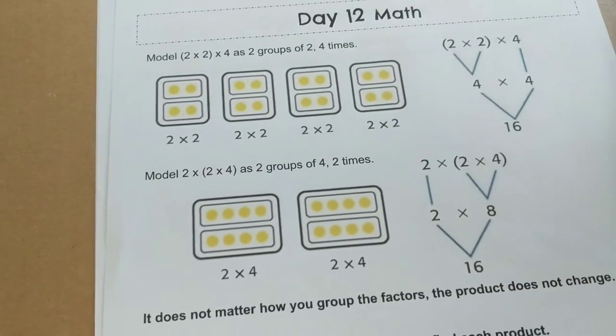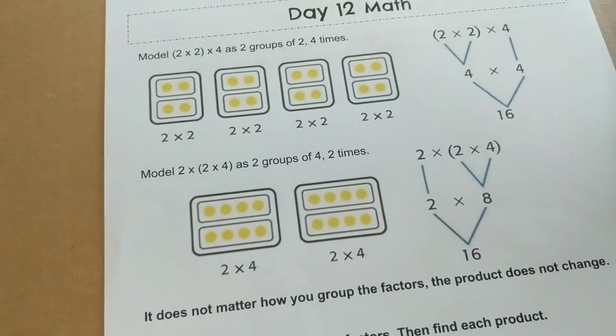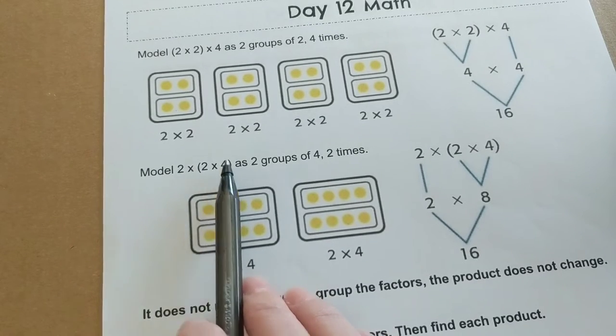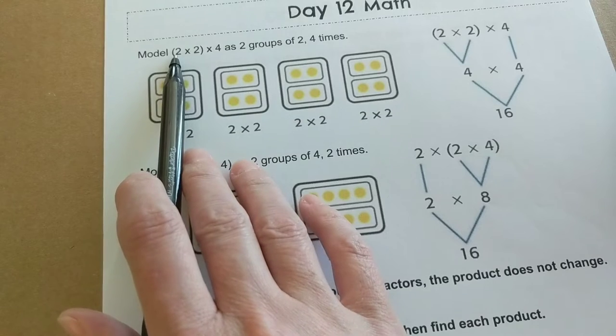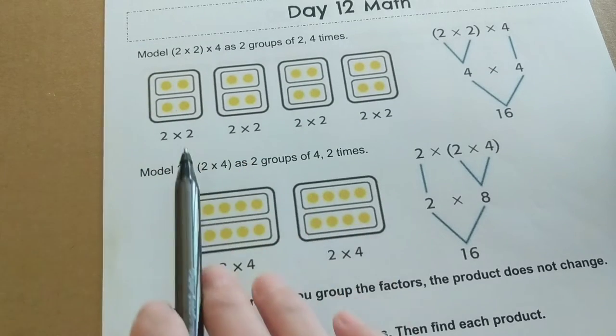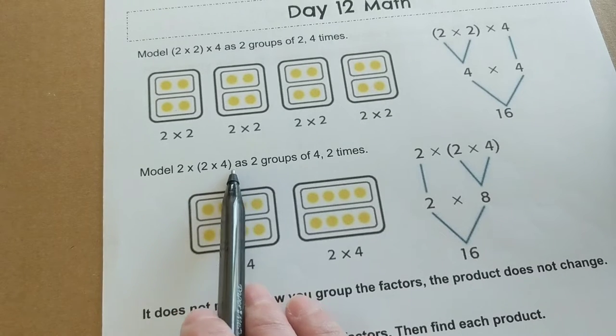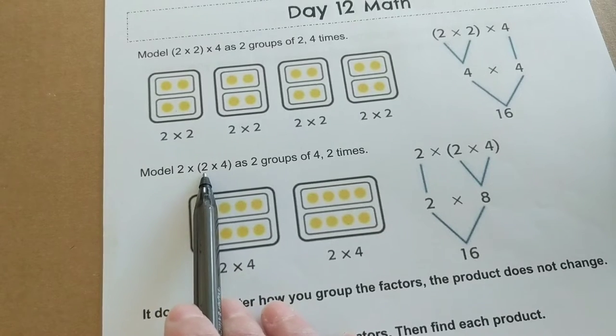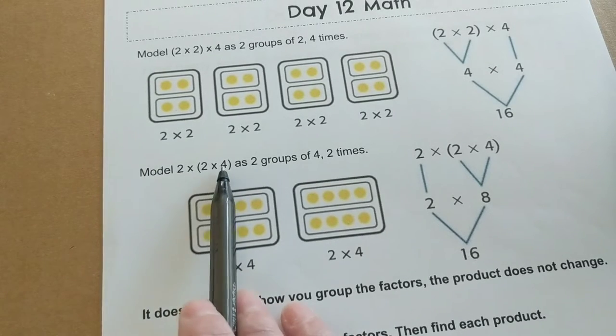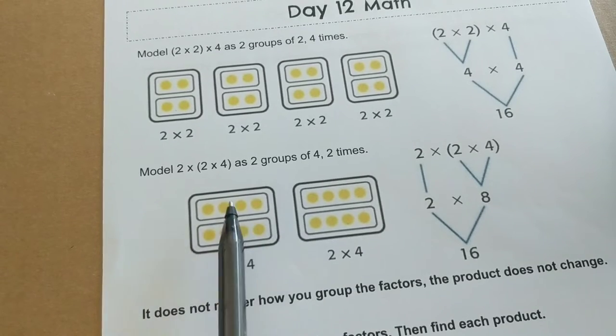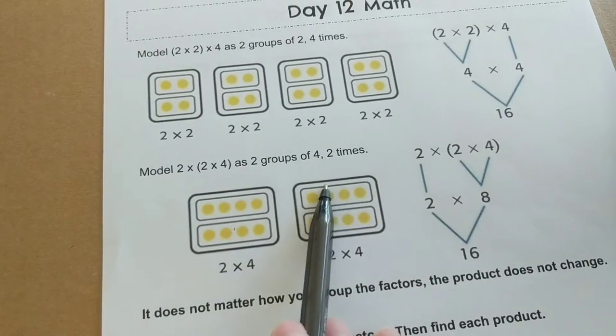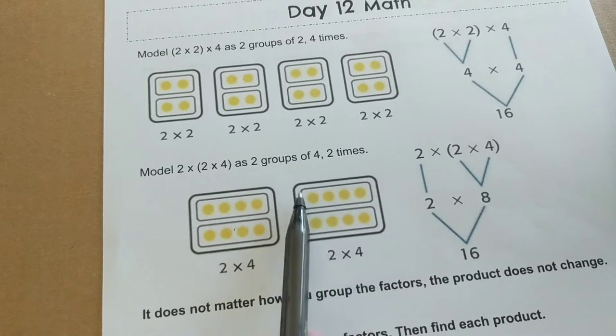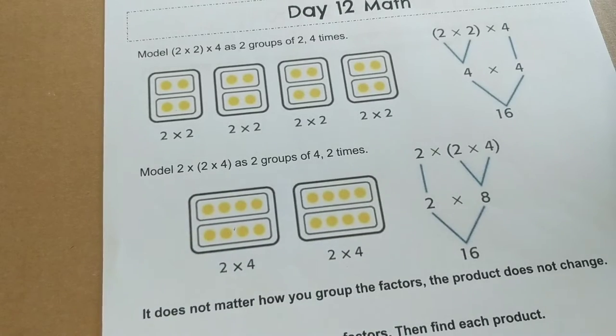Here's another example. They have modeled two times two times four and all they've done is they switch the parentheses. So it's showing you you could put the parentheses around two times two or you could put the parentheses around two times four. If you did two times four, you are making two groups of four. The first number tells you how many groups and the second number tells you how many in each group. Two times four, so this would be eight. And another group of two times four is eight.